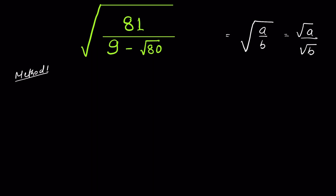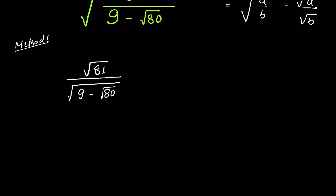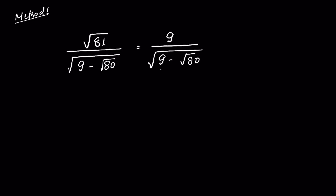So this we can write as √81 upon √(9 - √80), which equals 9 upon √(9 - √80). Now to remove this square root, if we can write these two terms in the form of (a ± b)², then we can remove the square root with that square.